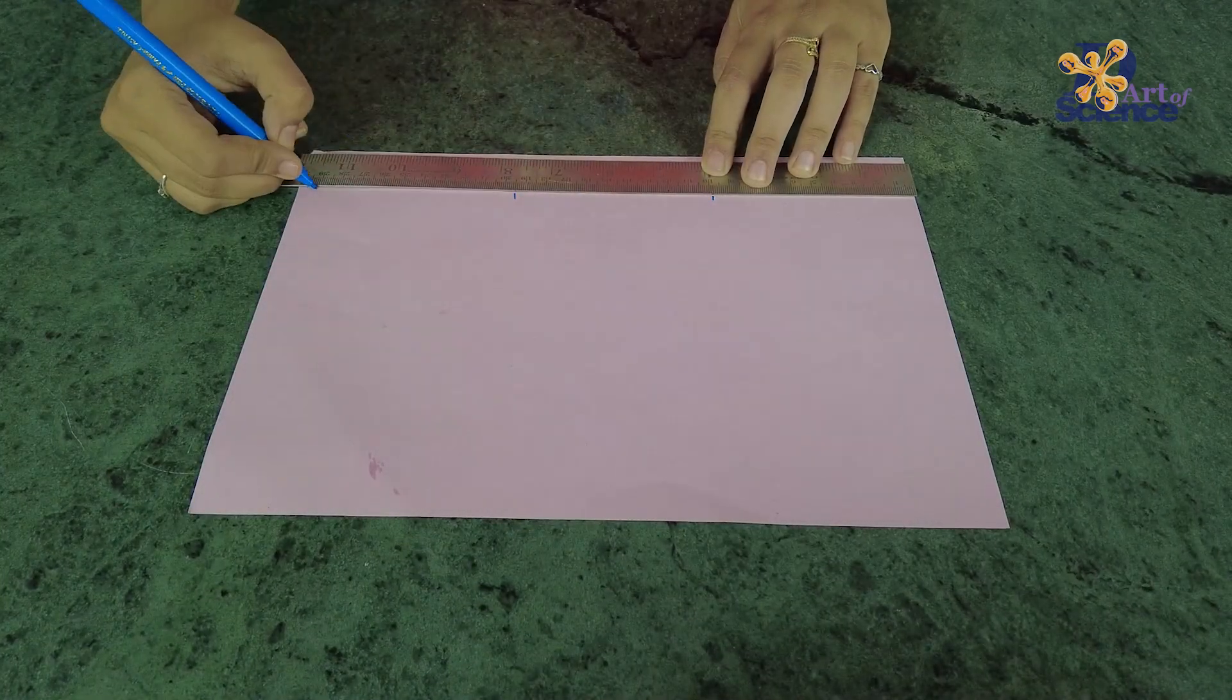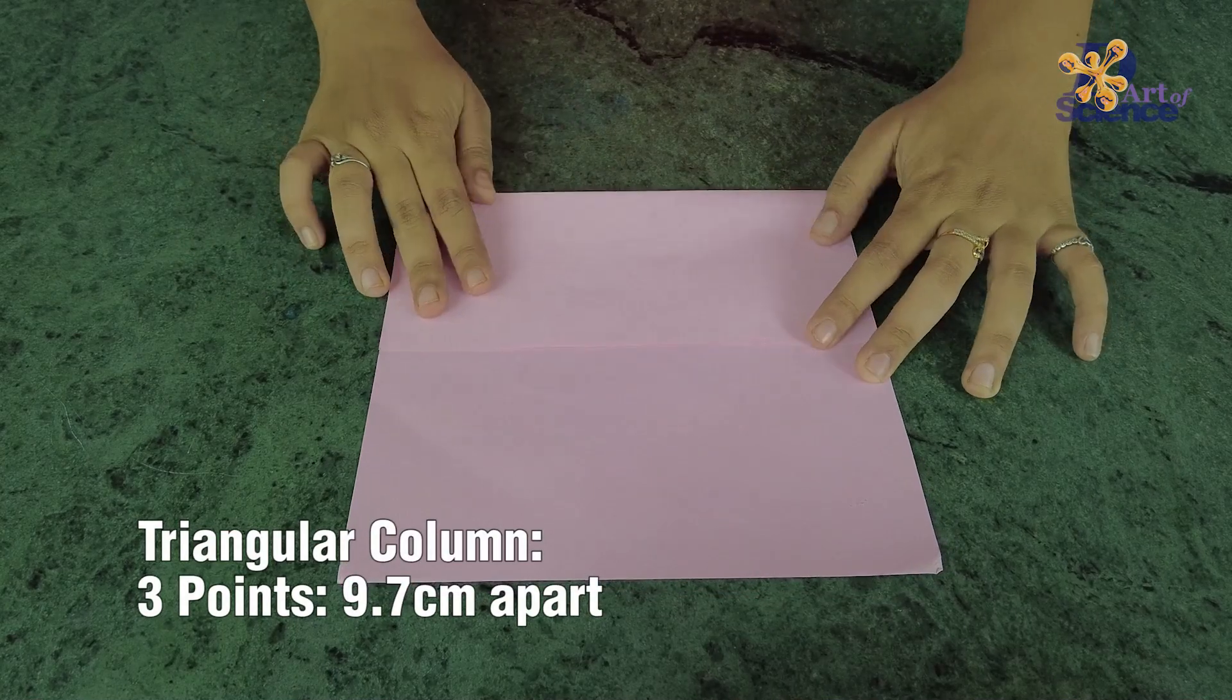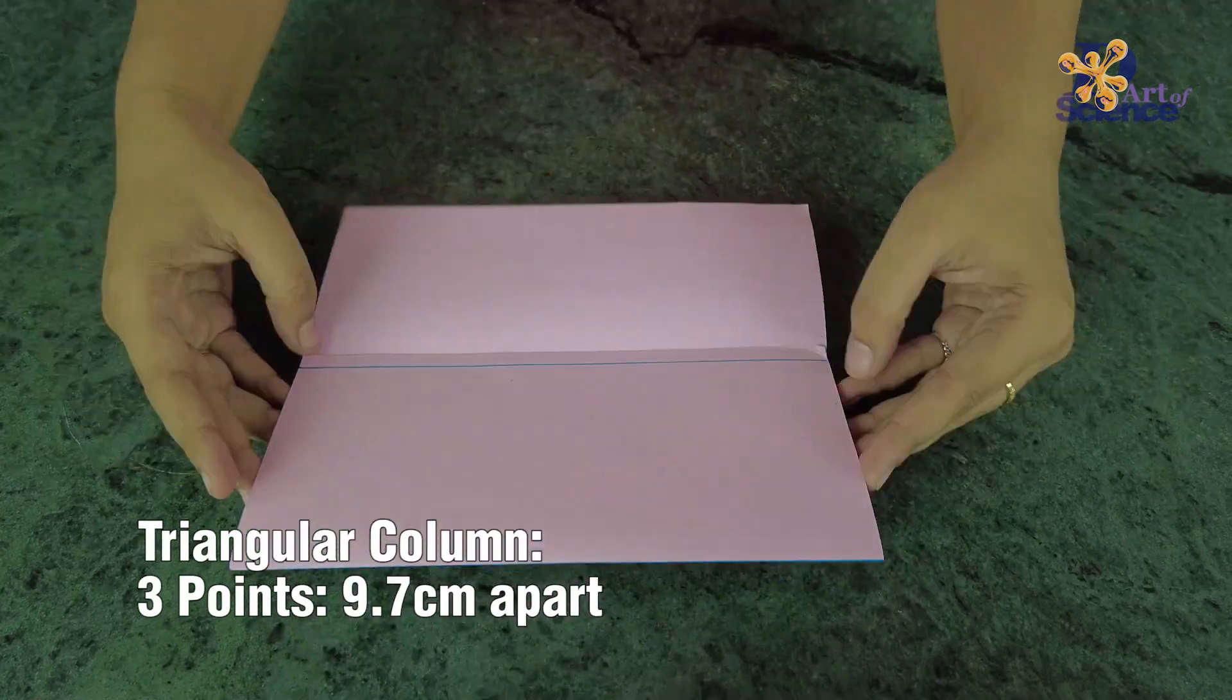For a triangular column, mark 3 points 9.8cm apart.